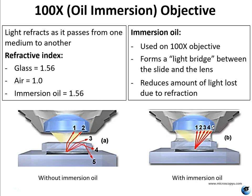With the 100x objective, you have the refractive index of glass and the refractive index of air — these two things are quite different. In the 100x objective, it's dark, and you have to take an extra measure to get more light into the objective. Using immersion oil — which has the same refractive index as the glass on the slide and the objective lens — allows light to get caught into a little tunnel or light bridge between the slide and the lens so it doesn't get lost or diffracted. The oil decreases the diffraction of light as it passes through the objective, which is important for resolution at 1000x.